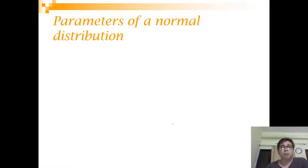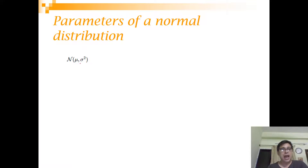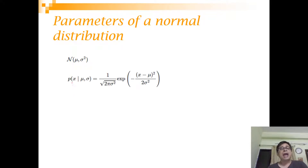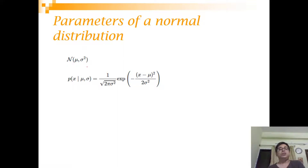We talked about parameters of a distribution, so let's start understanding this more deeply using a normal distribution. A normal distribution is represented by its mean and its variance. This is a normal distribution which follows a mean of mu and a variance of sigma squared. This can also be represented using a probability density function, and if you look at the probability density function, you will realize that it is nothing but a function of mu and sigma. Essentially, if you know mu and sigma, you know the distribution and can generate data using it.